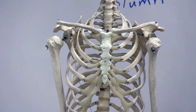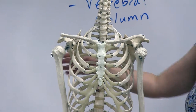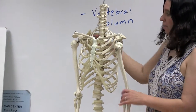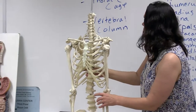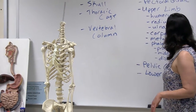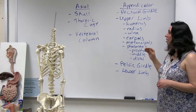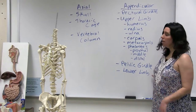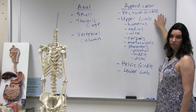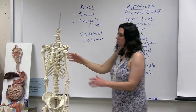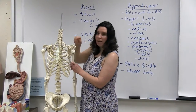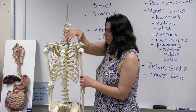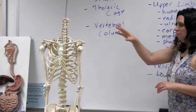Hanging off of the axial skeleton are the appendages — you can see the upper limbs and also the lower limbs. There are girdles that attach those upper and lower limbs to the axial skeleton: the pectoral girdle and the pelvic girdle. The pectoral girdle, covered in a previous video, basically consists of two main bones: the clavicle and the scapula, which connect our upper limb to the thoracic cage.